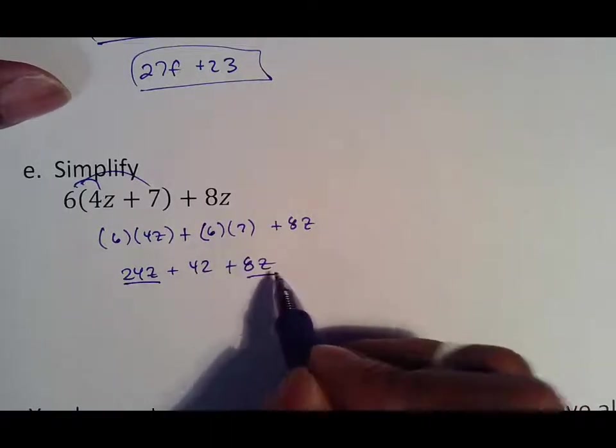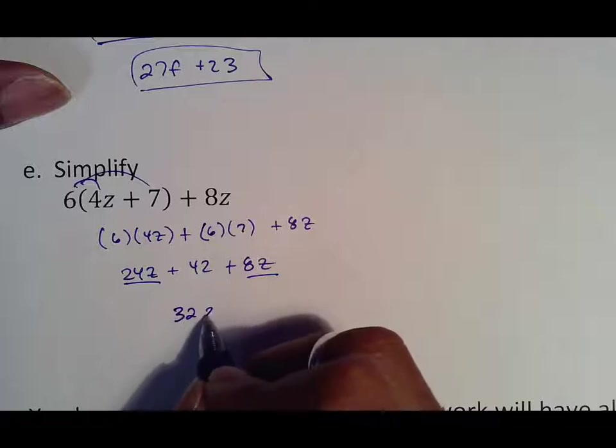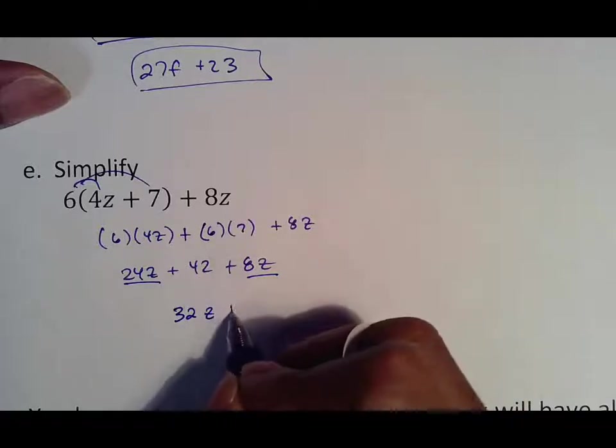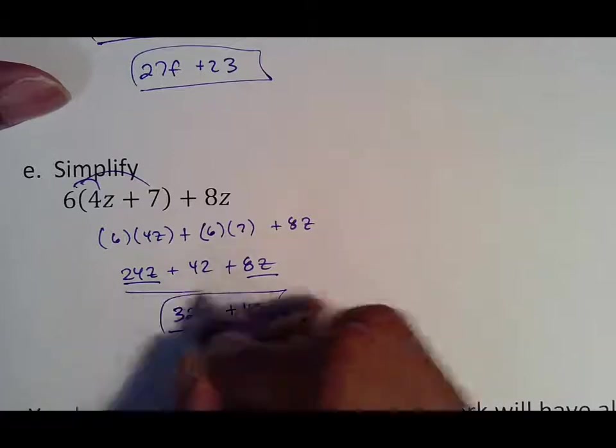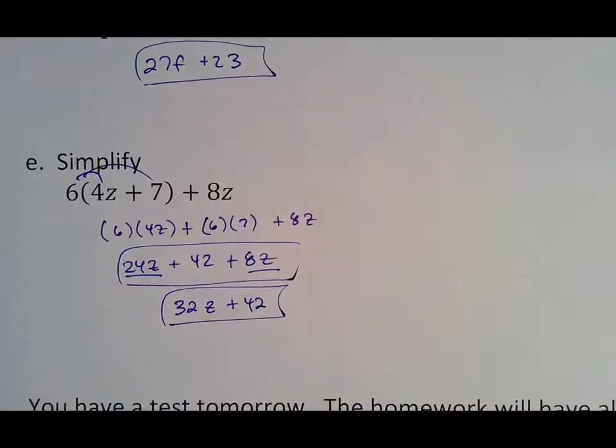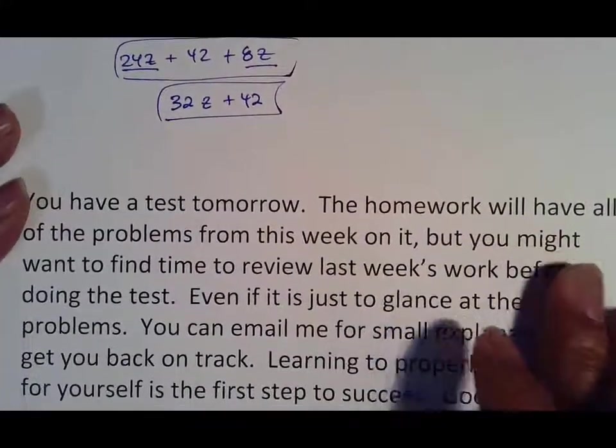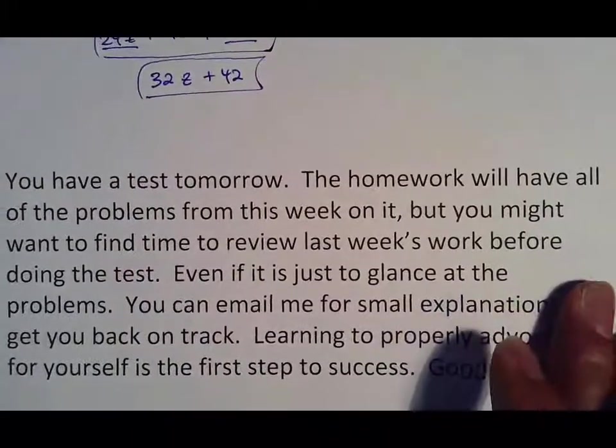But based off of what I know, 24z and 8z go together to make 32z. And 42 comes along for the ride. So I believe these are the two boxes you'll need. Just make sure you look at the answer if it tells you you're wrong and try to adjust.